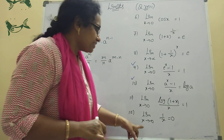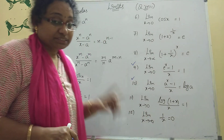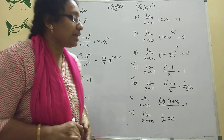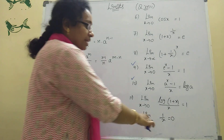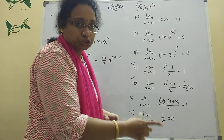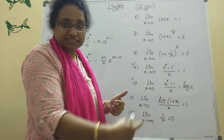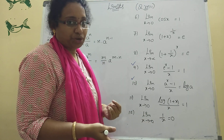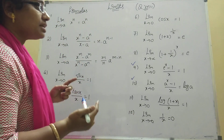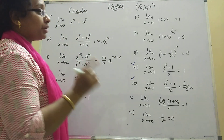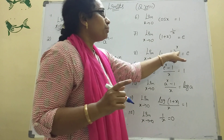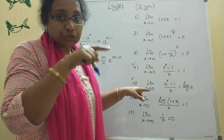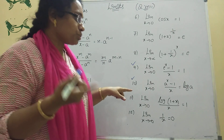For x tends to infinity formulas, there are only 3 or 4 but they are very important. Limit x tends to infinity, 1 by x equals 0. Whatever power of 1 by x — as the power increases the answer will be 0. Remember: if power is a variable, the answer is e; if it's 0 by 0 form, the answer is 1.